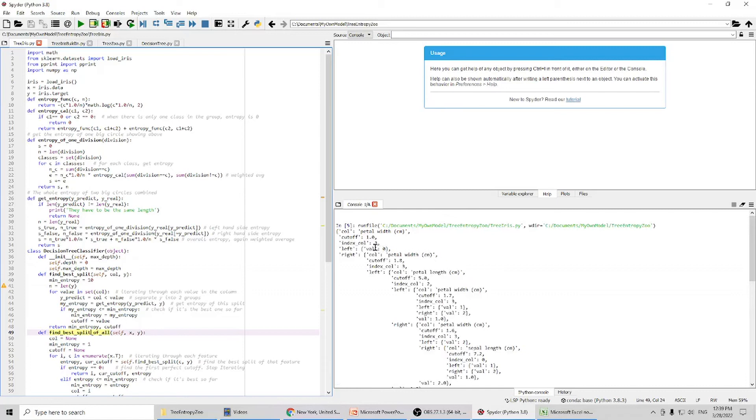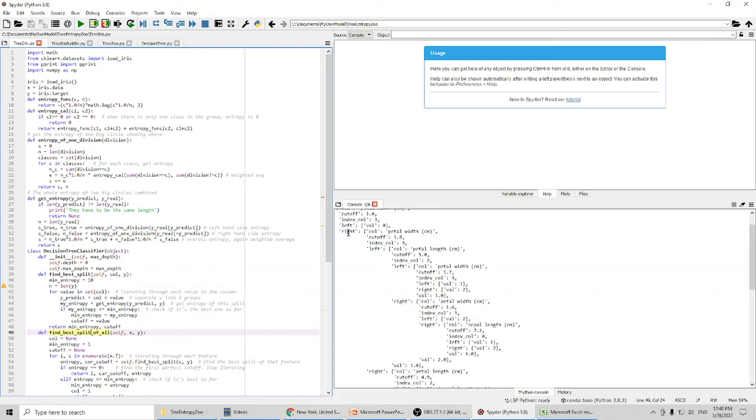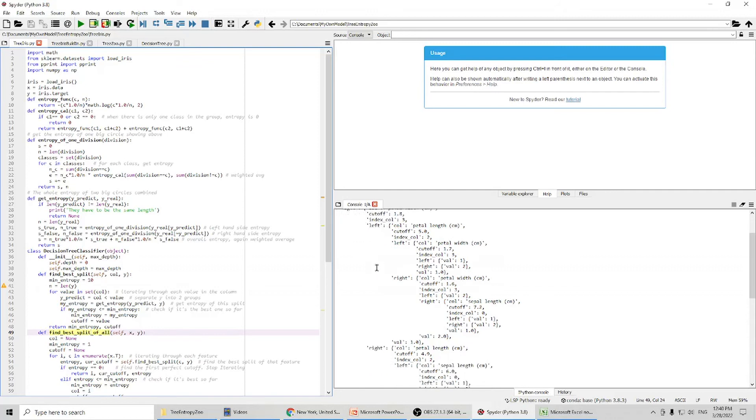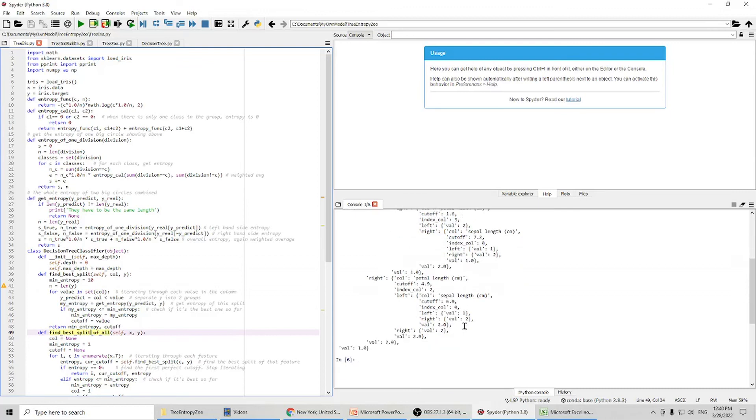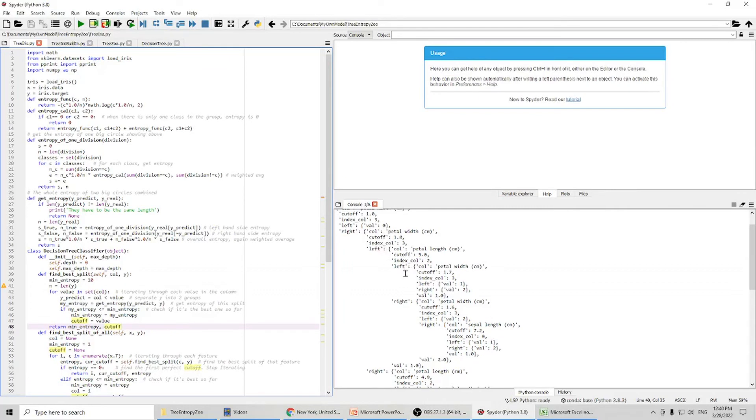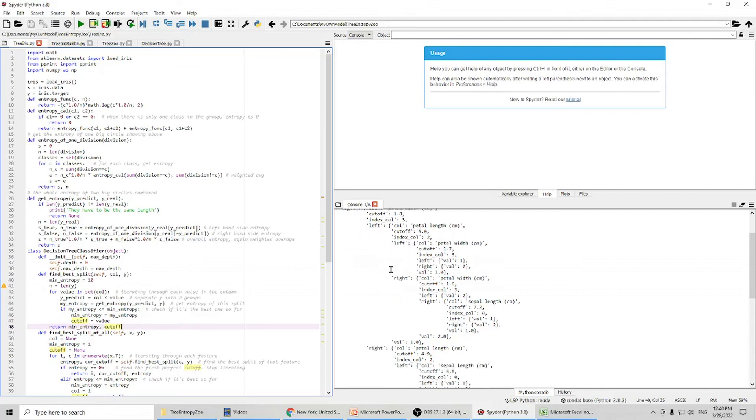You can see here, first we used this as our best split. This branch we are going to split it again. And to the right, we use petal length. And for the left branch, we can split it with petal length. And then we get a subtree for the right. Because we used our own functions, the output is not easy to read.